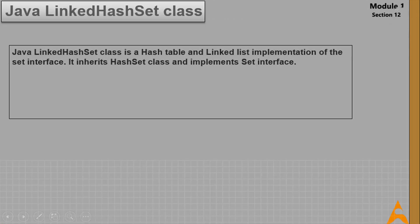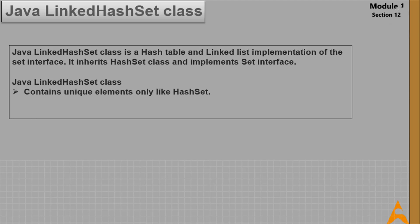Now let's talk about Java LinkedHashSet. LinkedHashSet is a hash table and linked list implementation of the Set interface. It inherits HashSet class and implements Set interface. Key points: it contains unique elements only like HashSet, provides all optional Set operations, permits null elements, and maintains insertion order.